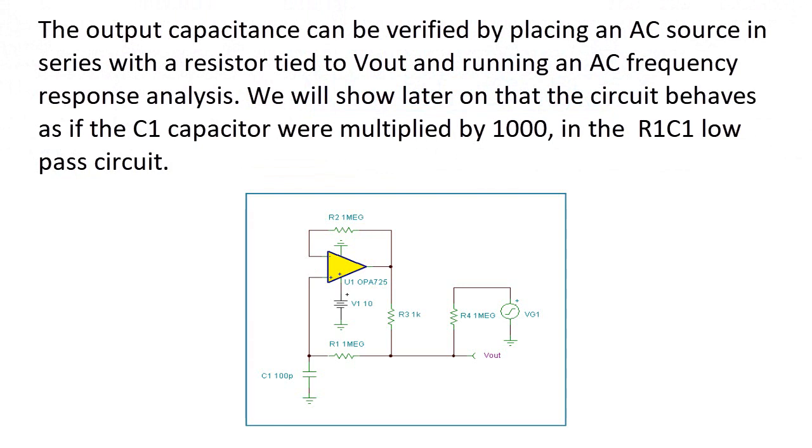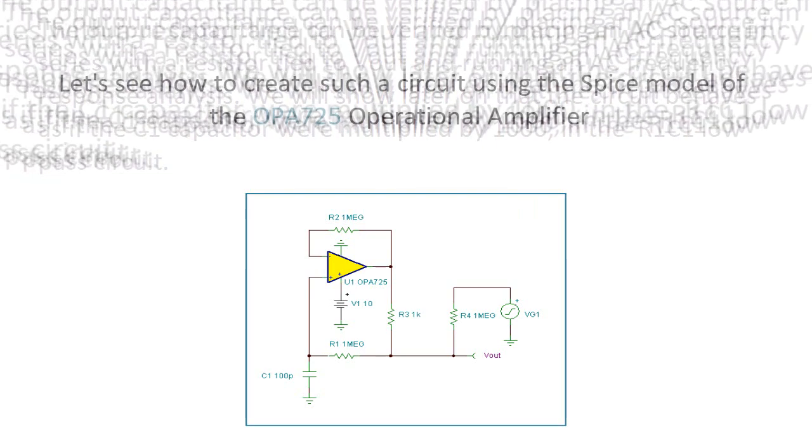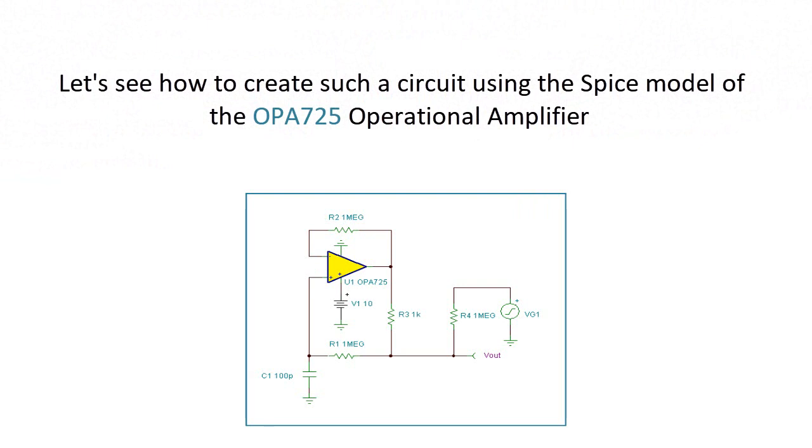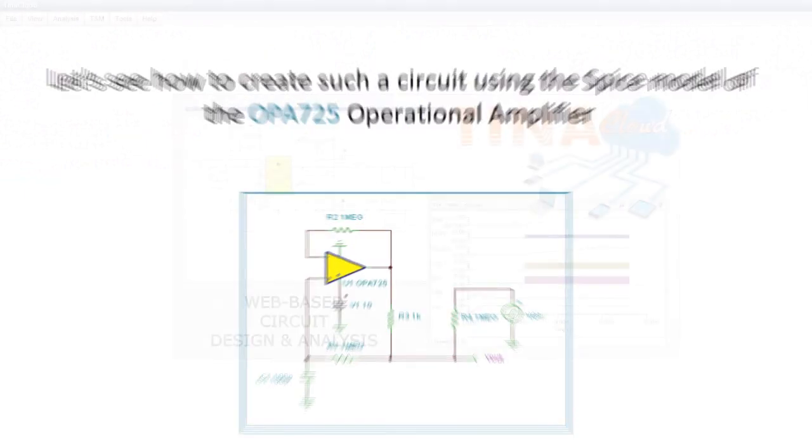We will show later on that the circuit behaves as if the C1 capacitor were multiplied by 1000 in the R1C1 low-pass circuit. Let's see how to create such a circuit using the SPICE model of the OPA725 operational amplifier.